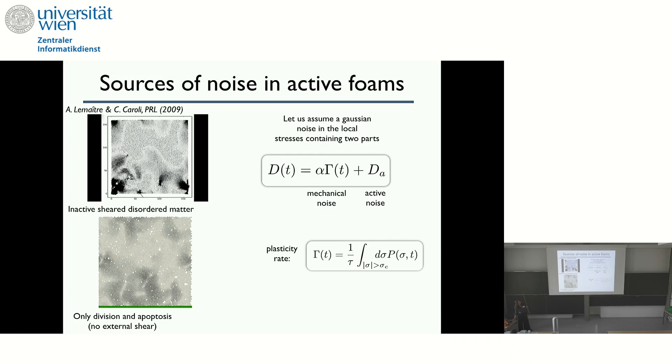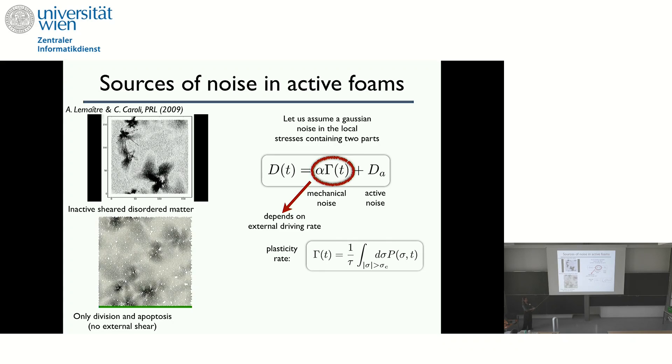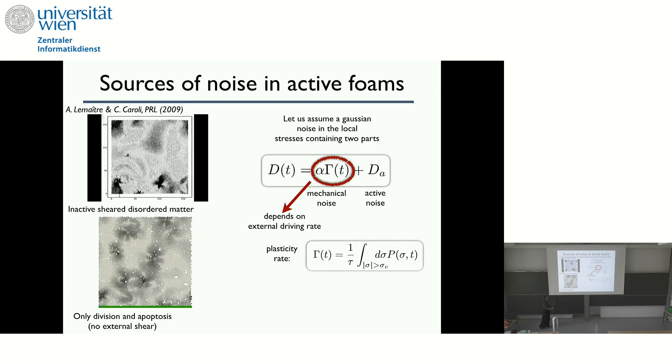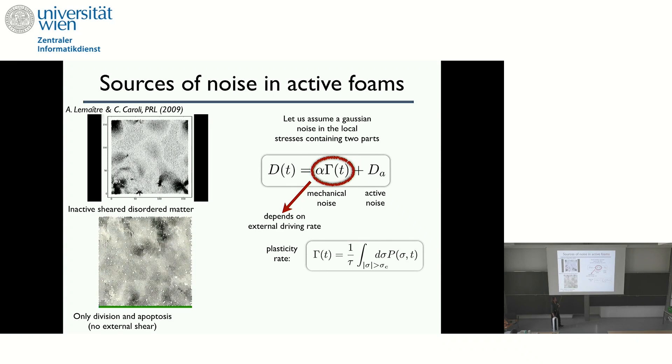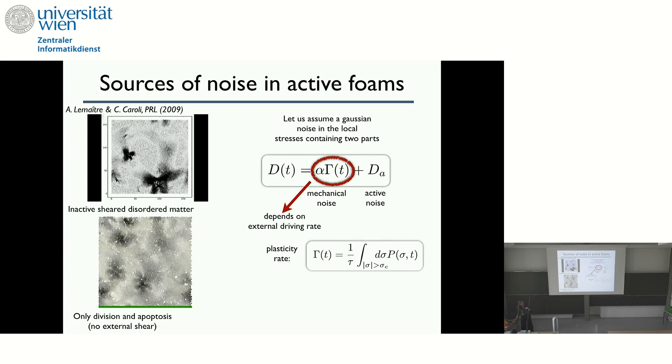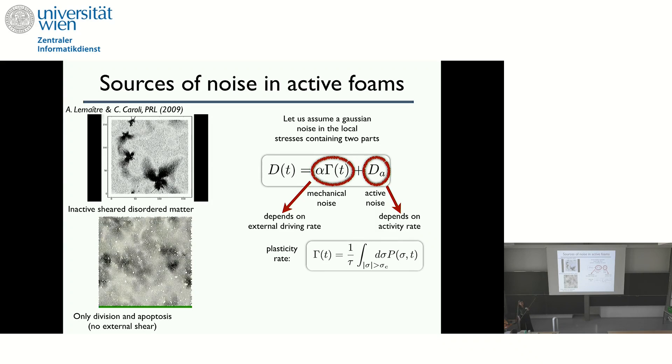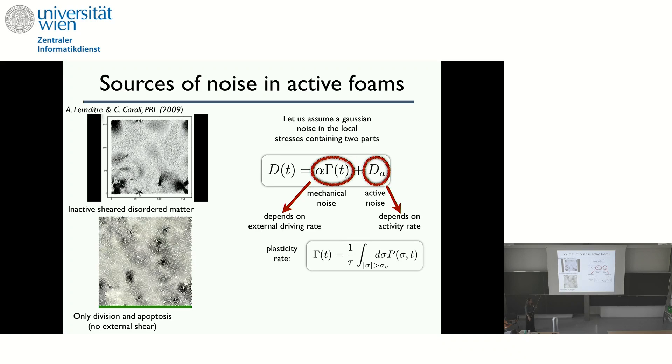And to do so I have here a figure that shows the sources of noise. So as I said before, there's one source of noise, which is just already in the inert sheared system, when you shear the system to the localized events, and it will create noise elsewhere in the system. Here is a simulation where there's only division apoptosis, no shear. And you see that you get also these plastic type events. So in the mean field equation that I just explained, you can assume that you have two contributions to the noise. The first one is the usual one, which is the mechanical noise that is proportional to the plasticity rate. And then you have another active noise that only depends on the activity rate and is constant.